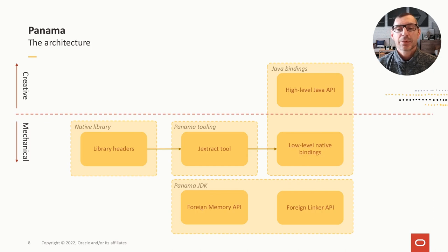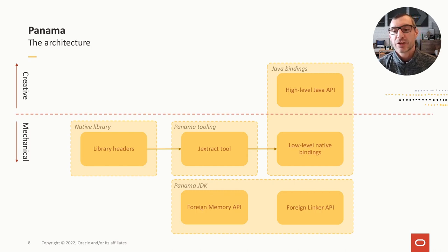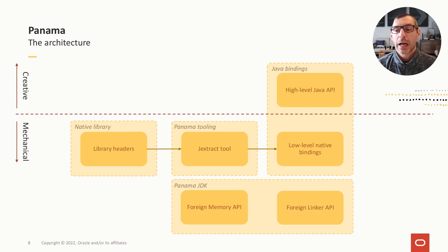This diagram recaps the architecture of the Panama interop support. In the middle is the JExtract tool, which consumes native library headers on the left and generates low-level Java bindings on the right. The bindings generated by JExtract sit on top of two important APIs: the Foreign Memory Access API, which allows allocating and accessing off-heap memory, and the Foreign Linker API, which allows calling foreign functions directly from Java code.